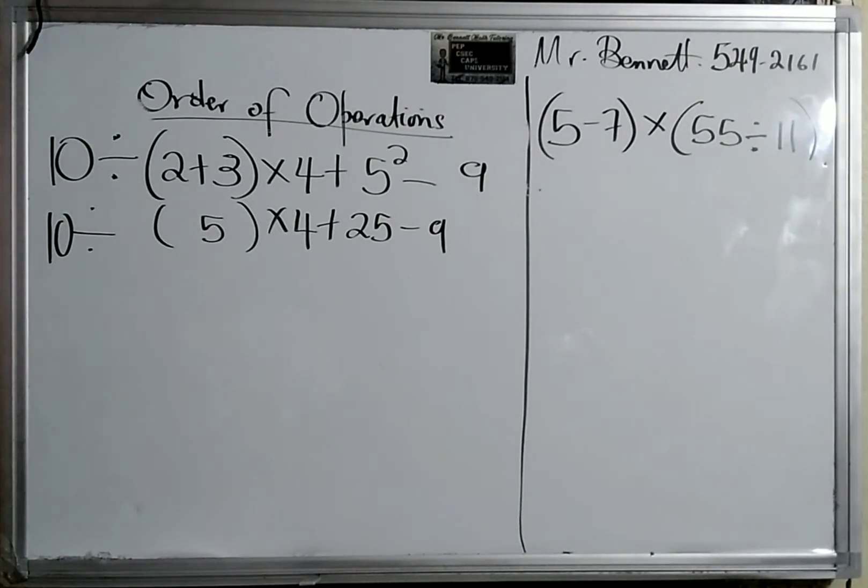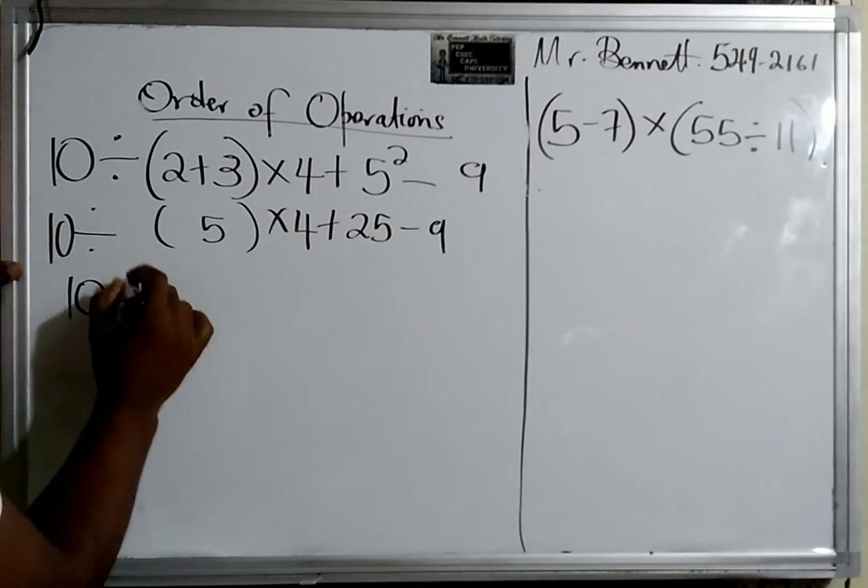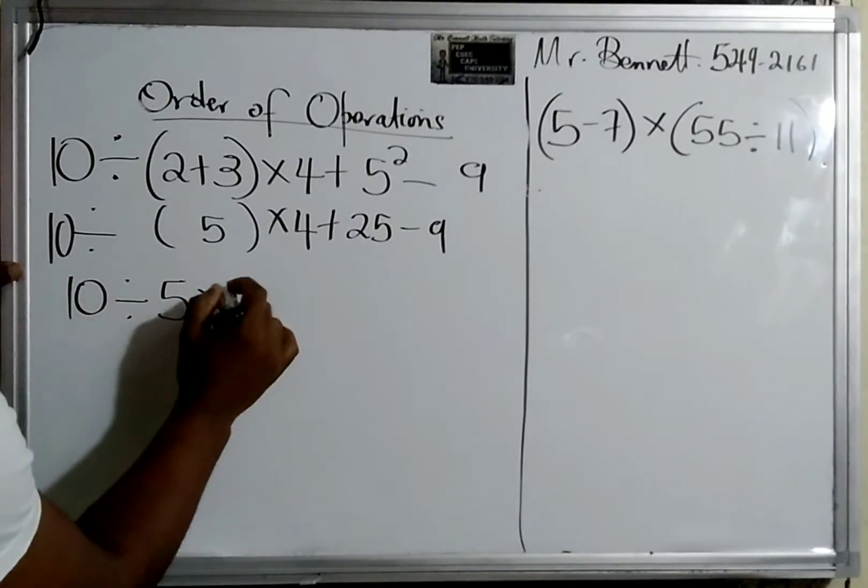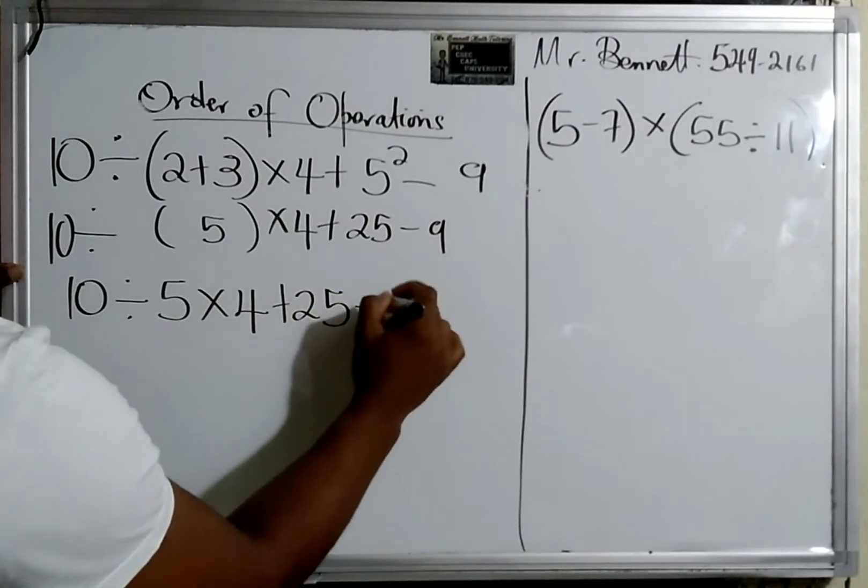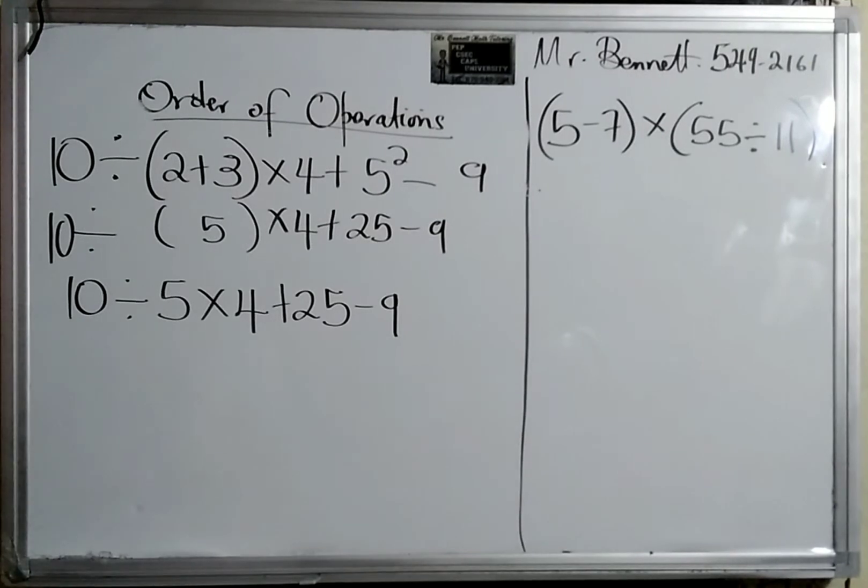So let's just take out the bracket now, so it will be 10÷5×4+25-9. So we're gonna just go back and check and see what the rule says that we are supposed to do.